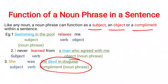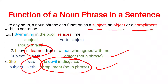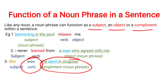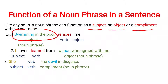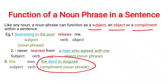In the third example, 'she was the devil in disguise' — 'the devil in disguise' is a complement noun phrase. This sentence doesn't contain any action word, so this part plays the role of a complement. The difference between an object and a complement is that an object always has an action word and a complement does not. In summary: the first phrase is a subject noun phrase, the second is an object noun phrase, and the third is a complement noun phrase.